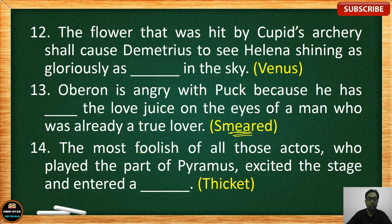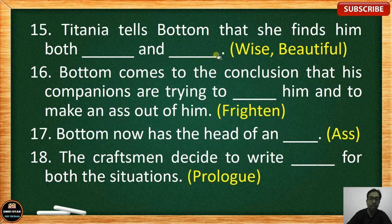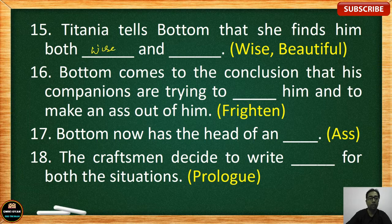Number 14: The most foolish of all those actors who played the part of Pyramus exited the stage and entered a blank — the correct answer is 'thicket.' Number 15: Titania tells Bottom that she finds him both blank and blank. There will be only one blank in your exam, but the two answers are 'wise' and 'beautiful.'